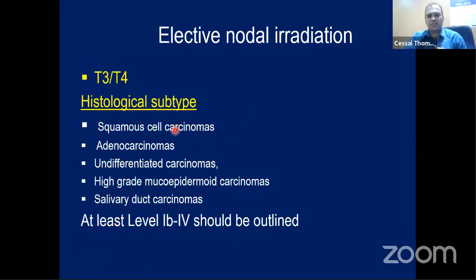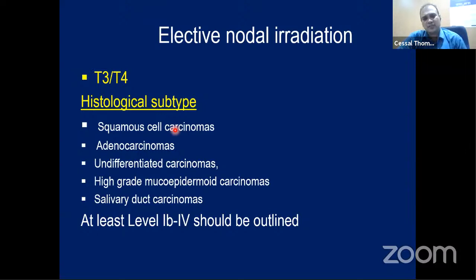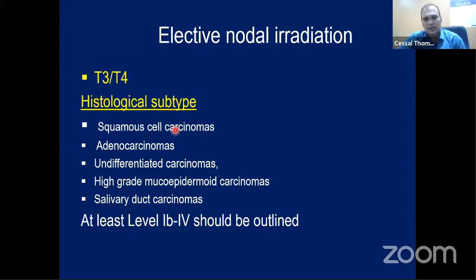Regarding elective nodal irradiation: if a patient has node-positive disease, the involved nodal region receives 60 Gy. Retropharyngeal nodes, 1B, 2A, and 2B should receive 60 Gy. If nodes are positive, remaining lymph node stations receive a prophylactic dose. Elective nodal irradiation can be considered in patients with very advanced disease (T3/T4) or high-grade histology. In that situation, levels 2, 3, 4, and 5 elective radiation can be considered.